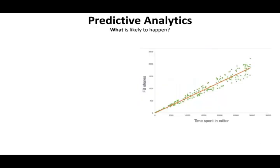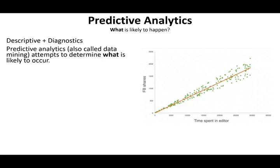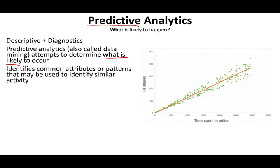Predictive analytics is basically what is likely to happen. Here we are looking a bit into the future. It's based on descriptive and diagnostic data — we look at them and then form predictive analytics. Sometimes it's called data mining. You are trying to predict what's likely to happen in the future.